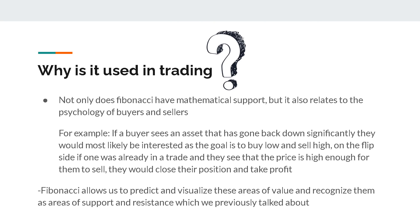Now, why is Fibonacci used in trading? Not only does Fibonacci have mathematical support, but it also relates to the psychology of buyers and sellers. For example, if a buyer sees an asset that has gone back down significantly, they would most likely be interested as their goal is to buy low and sell high. On the flip side, if one was already in a trade and they see that the price is high enough for them to sell, they would close their position and take profit.